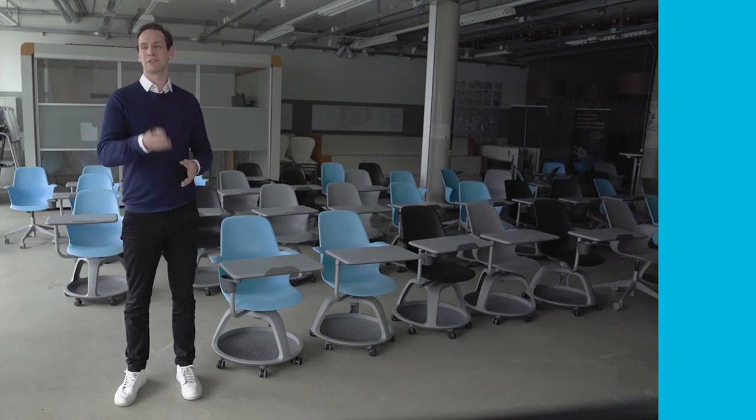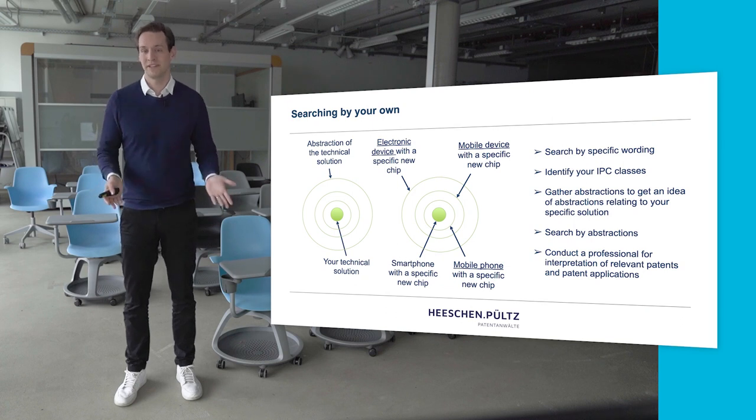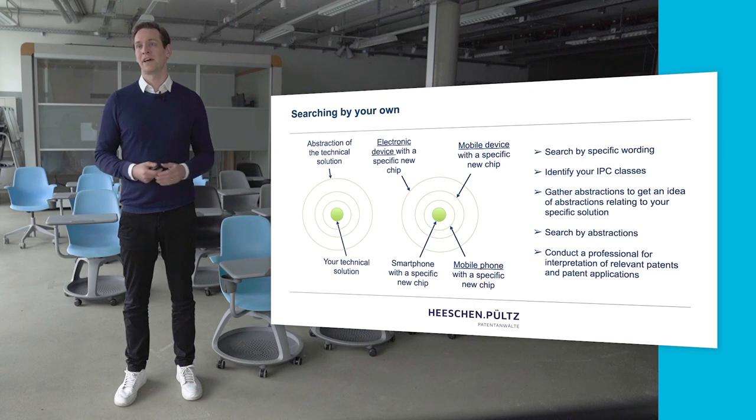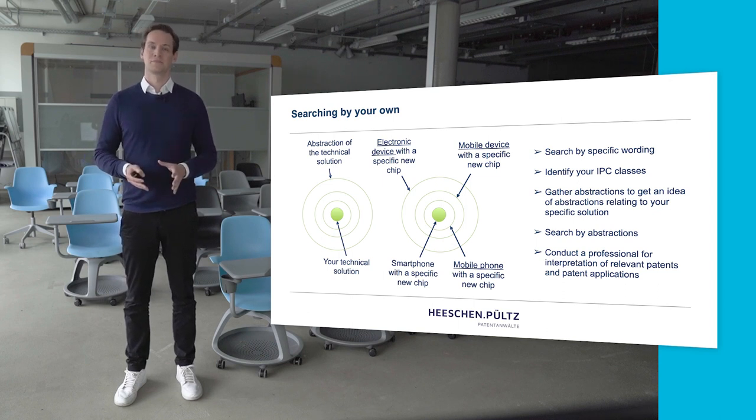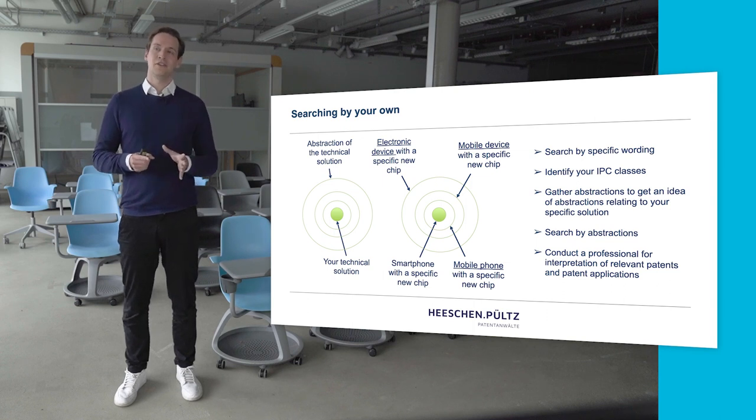If you want to do it on your own, keep in mind that patent applications protect the idea in general. Your technical solution has different layers of abstraction — there may be several products beneath your idea. For example, a smartphone with a specific chip could also be described as a mobile device or an electronic device, so consider an iPad as well. You can search by specific words to find relevant patents, or identify your IPC class, since all technical areas are organized under physics, chemistry, and so on, down to more specific subcategories.